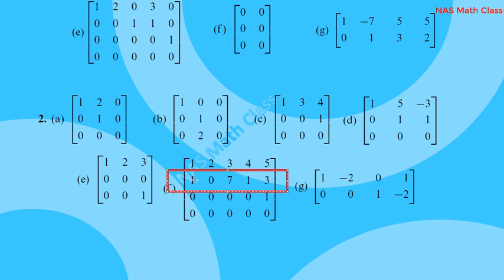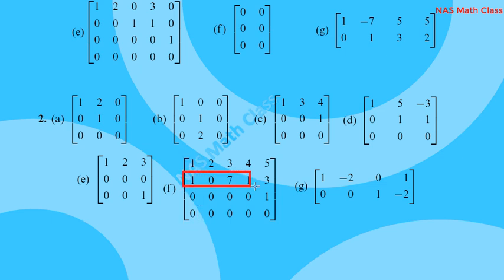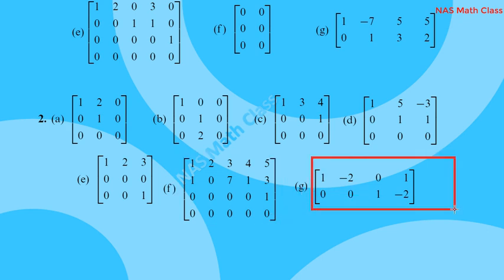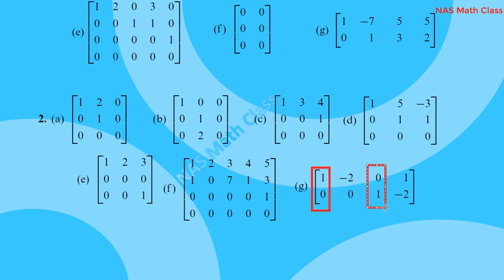Here we check that the first element of each non-zero row is a leading one, equal to 1. However, we also need to verify that the entries above and below each leading one are zero for it to qualify as reduced row echelon form.